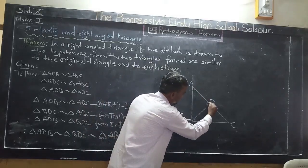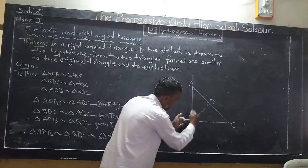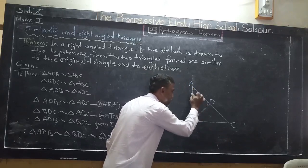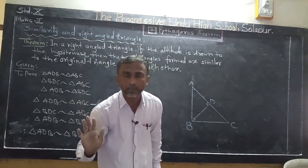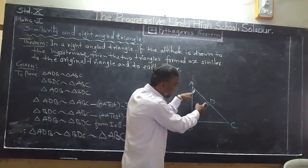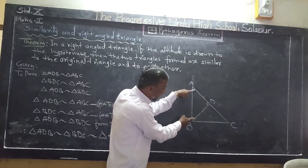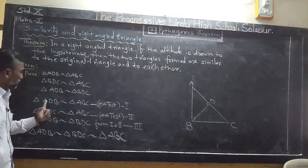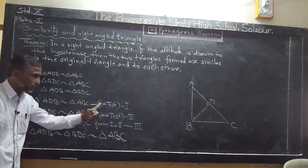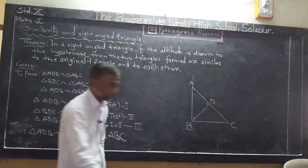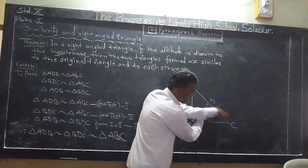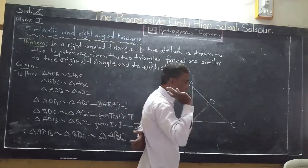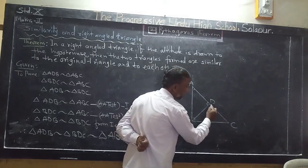Second: angle ADB is 90 degrees, which is congruent to angle ABC — each being a right angle. Since two angles of the smaller triangle ADB are congruent to corresponding angles of the larger triangle ABC, therefore by the AA test, triangle ADB is similar to triangle ABC.